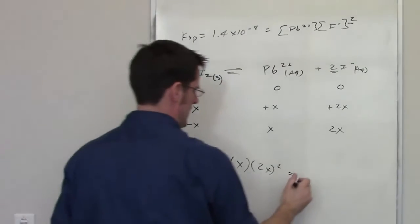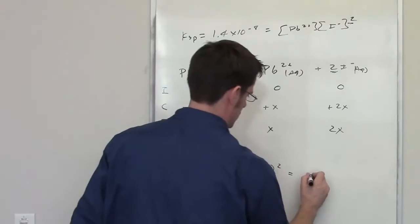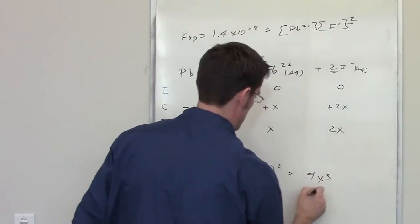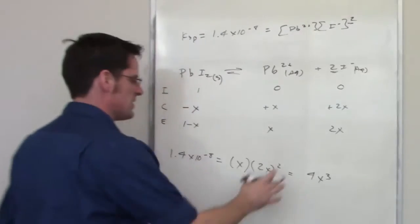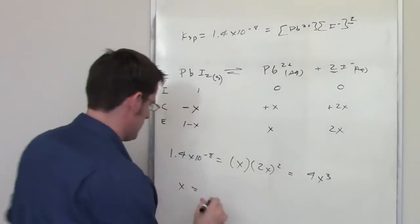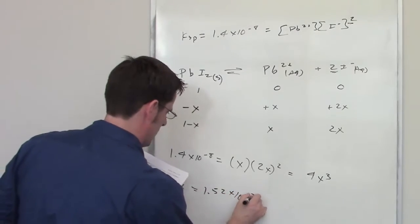You do the math here, you end up getting 2x squared times x, which is 4x cubed, being equal to that. Now, if you solve for x, you end up getting 1.52 times 10 to the negative 3rd.